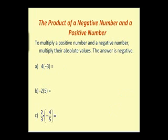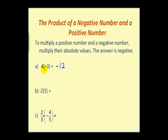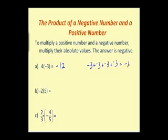Let's talk about the product of a negative number and a positive number. Most textbooks state the rule as: to multiply a positive and a negative number, multiply their absolute values and the answer is negative. So 4 times negative 3 gives us negative 12. To justify this, we think of 4 times negative 3 as 4 groups of negative 3, or adding negative 3 to itself 4 times, which gives negative 12.